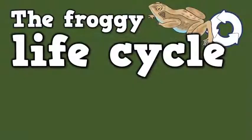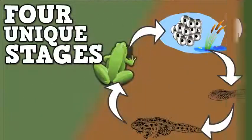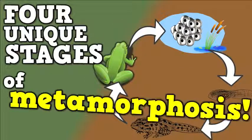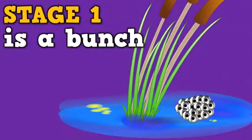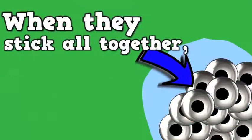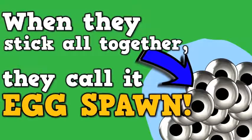The froggy life cycle goes like this: four unique stages of metamorphosis. Stage one is a bunch of eggs in a pond. When they stick all together they call it an egg spawn.